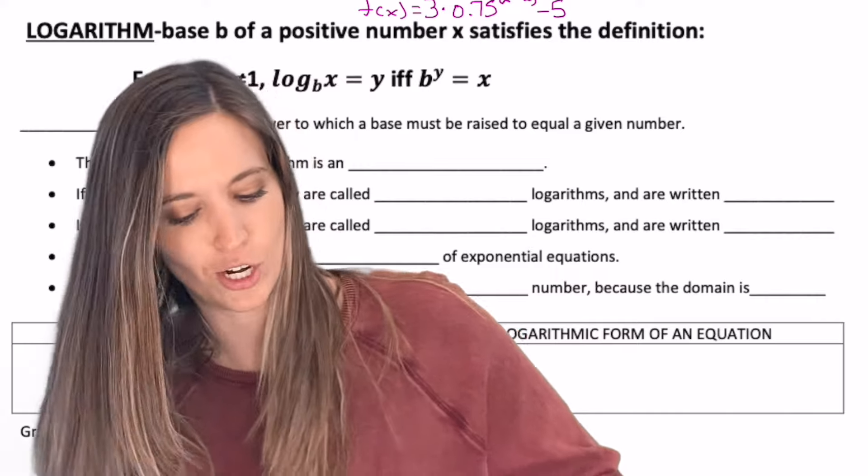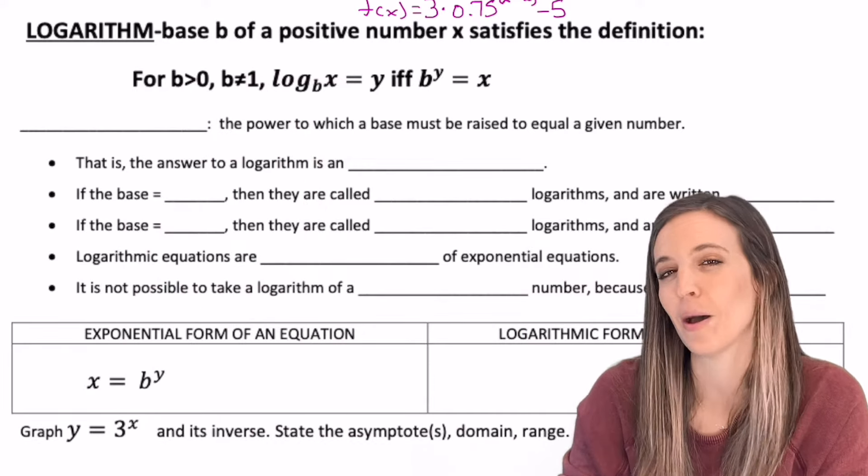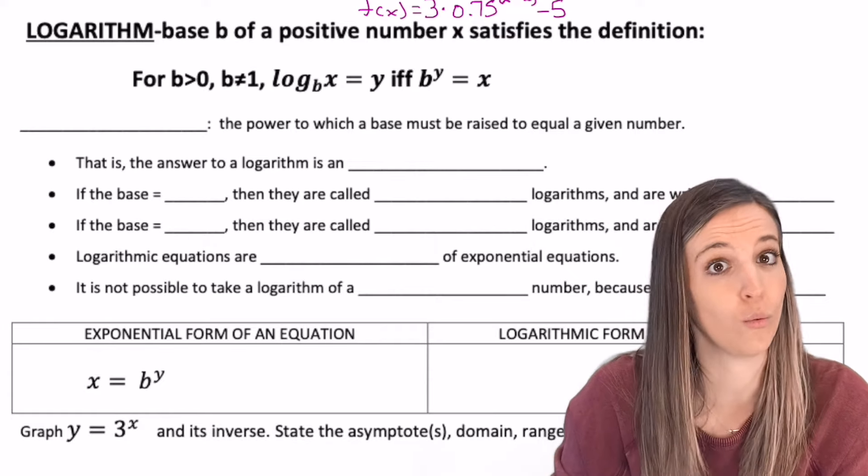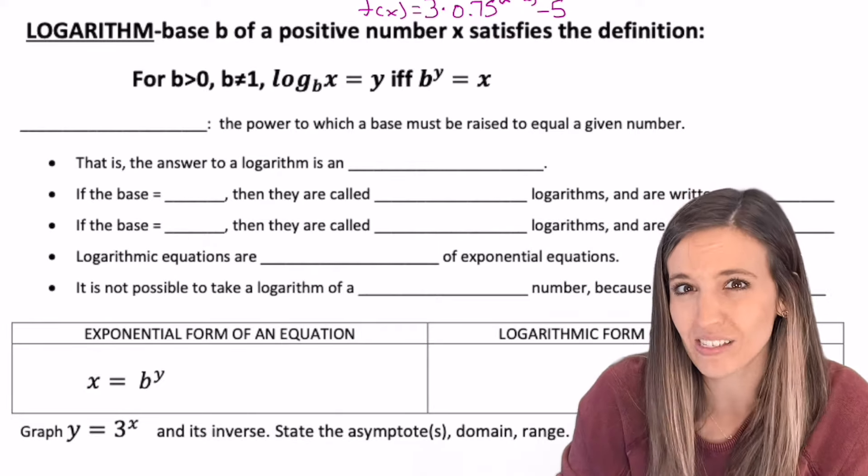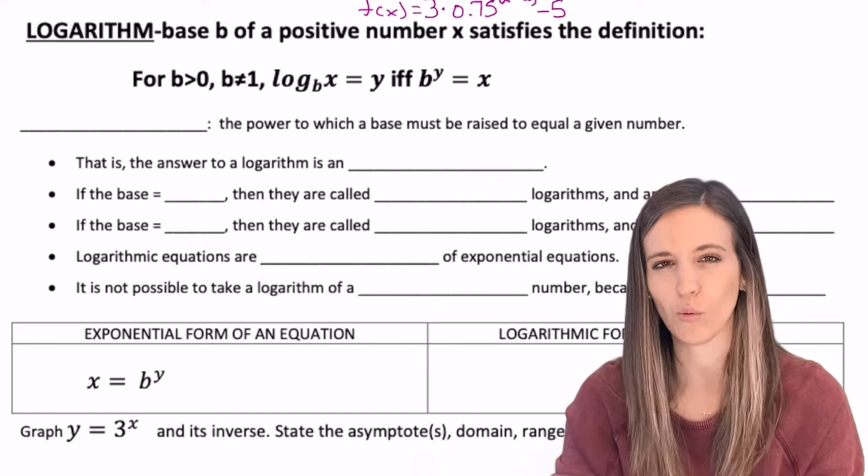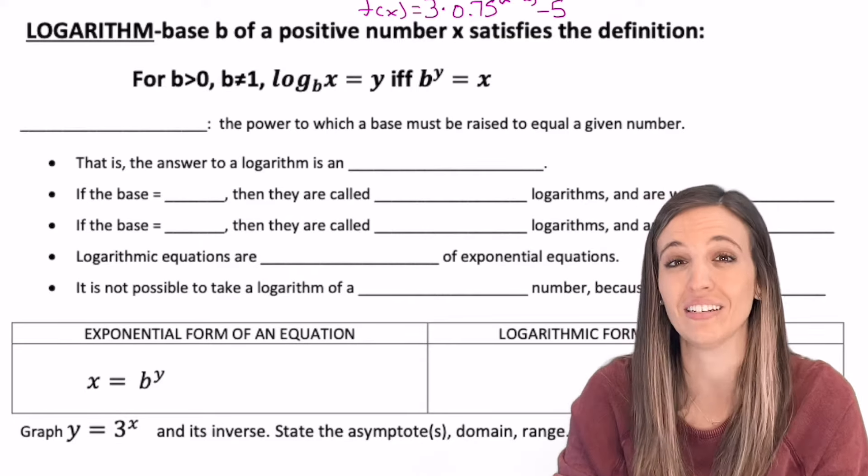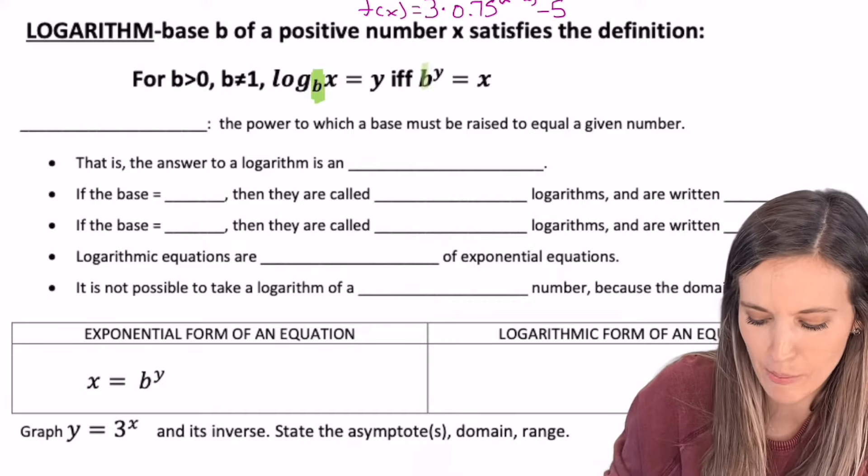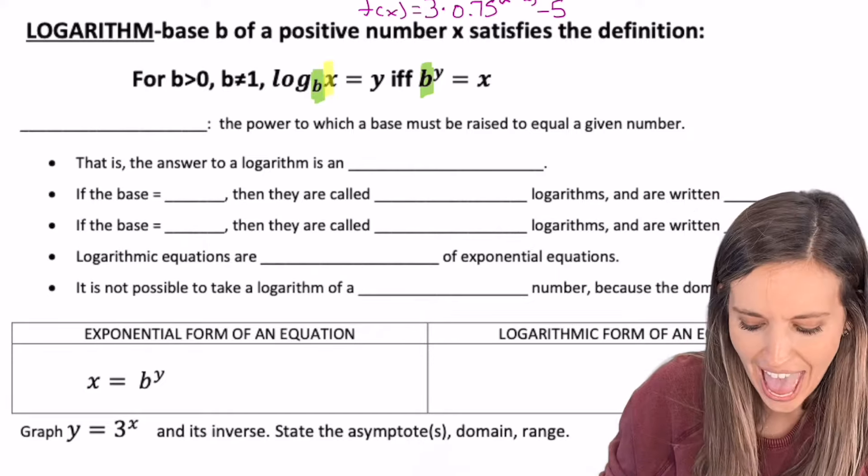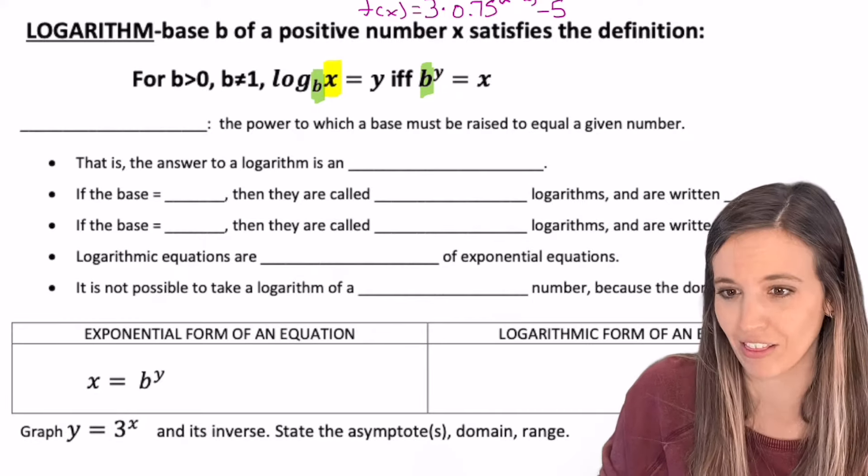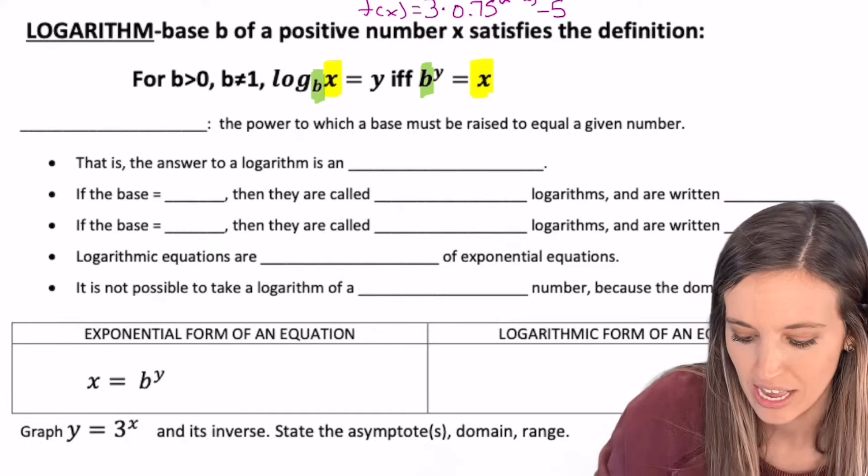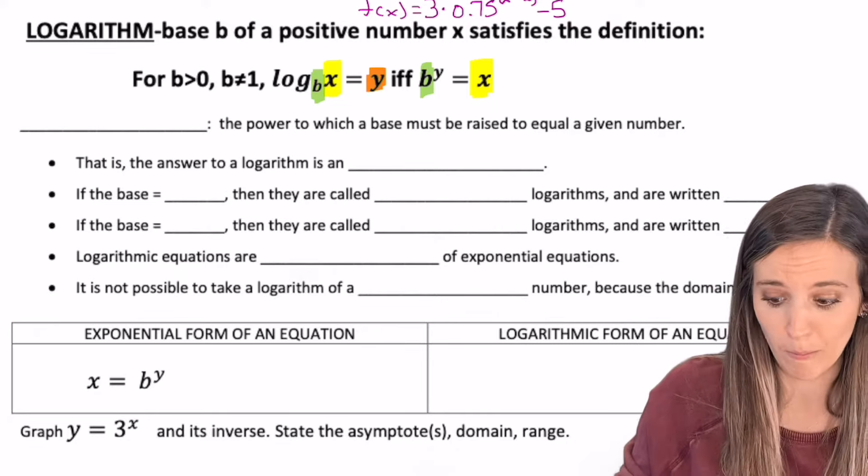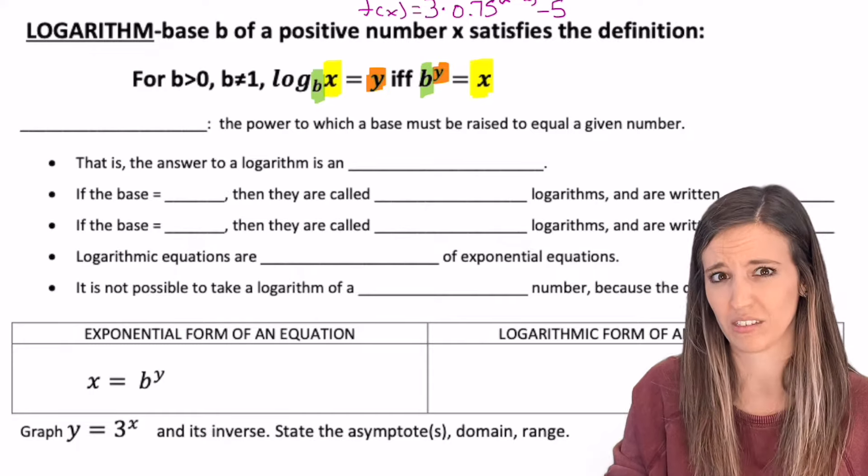Let's look at this definition. Logarithm base b of a positive number x satisfies the definition for b greater than zero, where b isn't equal to one. Log base b of x equals y if and only if b to the y equals x. Let's take a closer look at that. Base b here is the base of my exponential. X is the argument of my logarithm but the answer to my exponential. And then y is the answer to my logarithm but the exponent in my exponential.